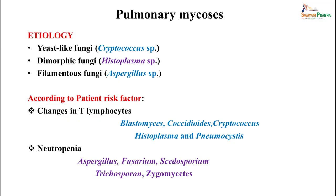The fungi which cause these infections include yeast-like fungi such as Cryptococcus species, dimorphic fungi like Histoplasma, and filamentous fungi like Aspergillus species. In patients with T lymphocyte changes, infections by Blastomyces, Coccidioides, Cryptococcus, Histoplasma, and Pneumocystis are seen. In neutropenic patients, Aspergillus and other hyaline hyphae are more likely to cause infection.